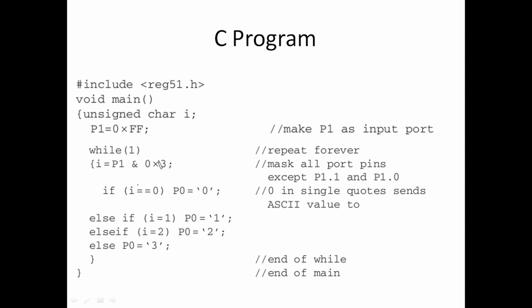Here, we compare this. In the same bit, we will add P0 to single codes using ASCII value. Else if i equals 2, i equals 0 and P0 equals 0. Else if i equals 1 and P0 equals 1. Else if i equals 2 and P0 equals 3.